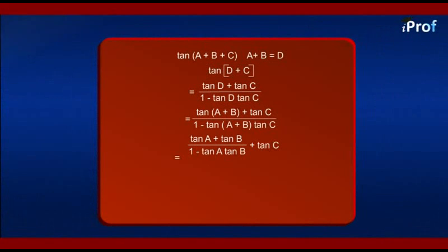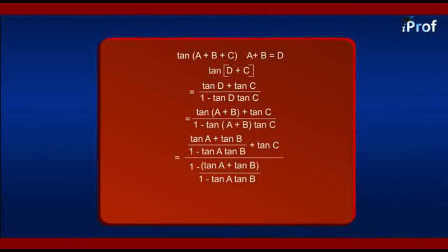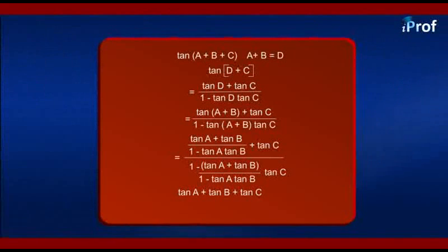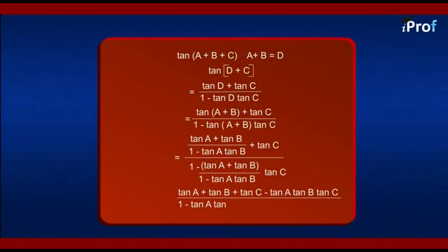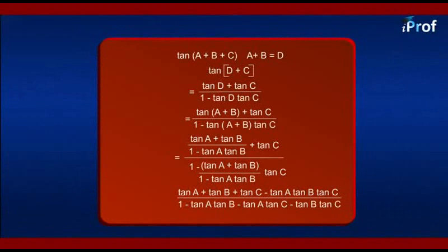In the numerator we get tangent A plus tangent B plus tangent C, and in the denominator we get 1 minus tangent A tangent B upon 1 minus tangent A tangent B multiplied by tangent C, simplifying to give us the formula for tangent of A plus B plus C: tangent A plus tangent B plus tangent C minus tangent A tangent B tangent C, all over 1 minus tangent A tangent B minus tangent B tangent C minus tangent A tangent C.